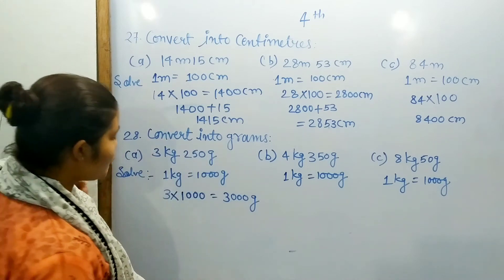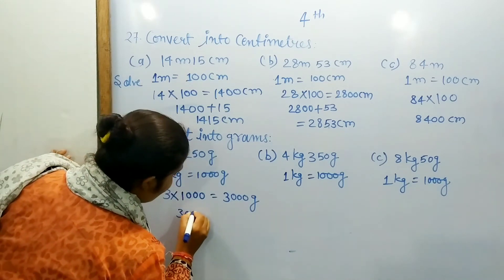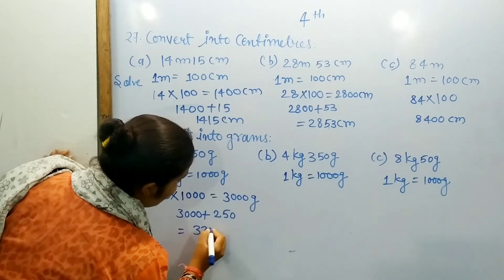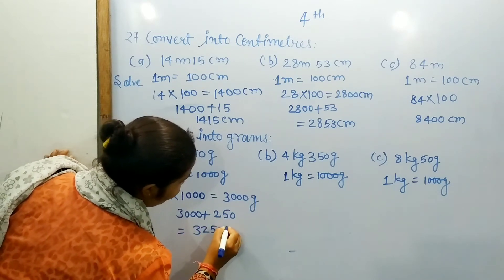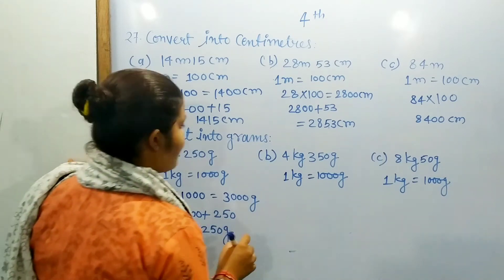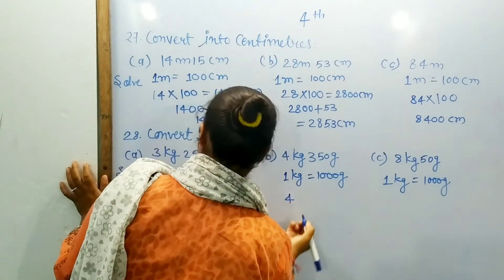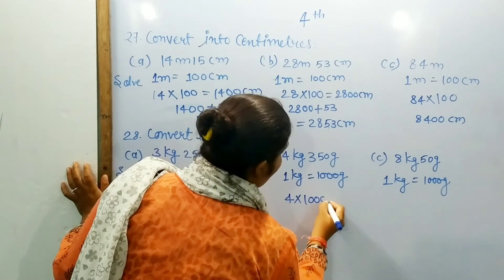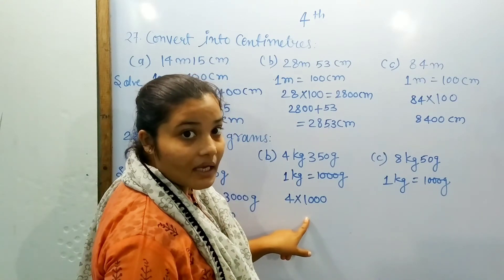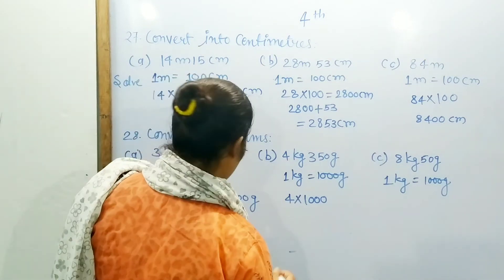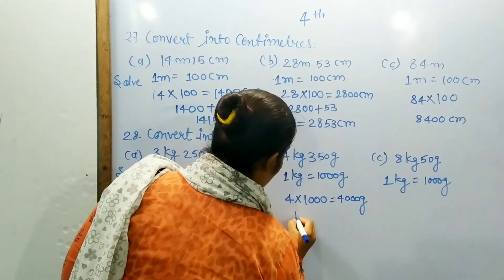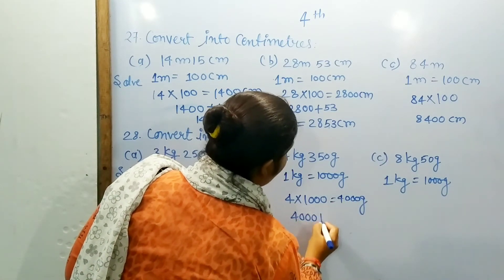We have to get three thousand grams. Okay, now we have four kg. We have four kg for 1 thousand grams — we multiply. Then we can do four thousand grams.